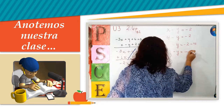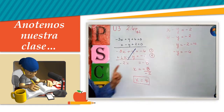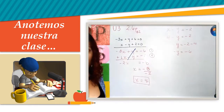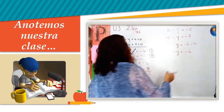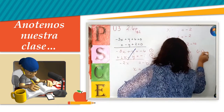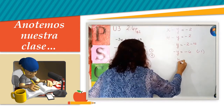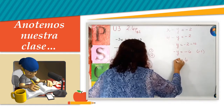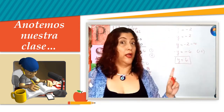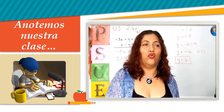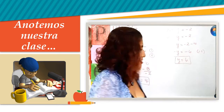Signos iguales se suman, por tanto tengo menos 6. La variable no nos puede quedar negativa. Para esto utilizaré un truquito matemático: voy a multiplicar por menos 1 todos sus elementos. Menos por menos da más, menos por menos da más, y no nos afecta en absolutamente nada. Tengo las dos coordenadas, por tanto ya encontré el punto donde se cruzarán las dos rectas.